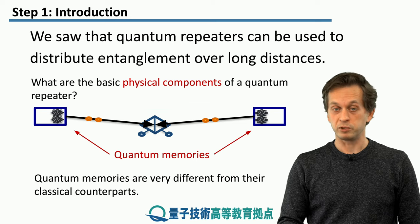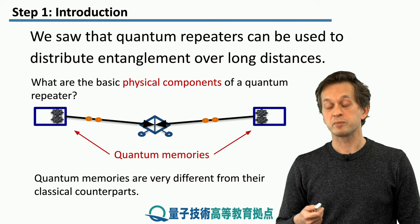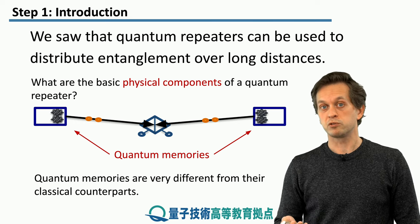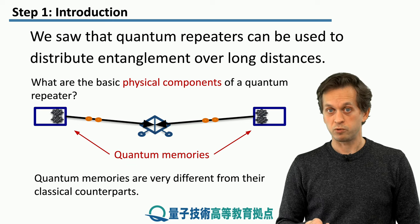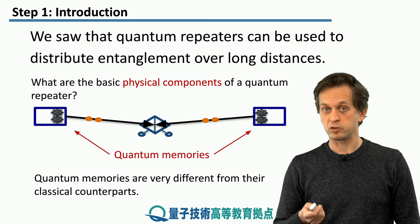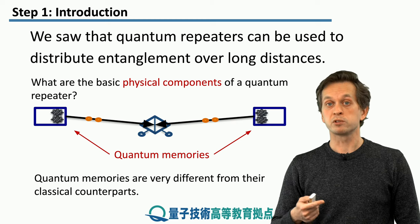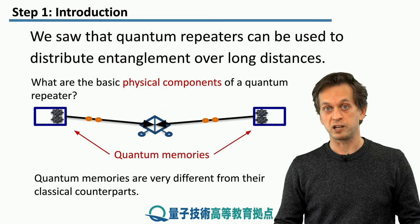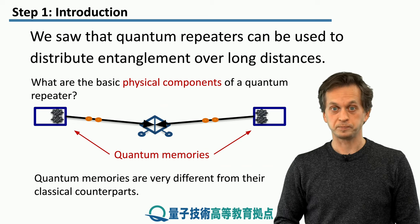The difference between classical memories and quantum memories is quite substantial. Classical memories usually store just zeros and ones — only classical bits. Whereas quantum memories have to be able to store one, zero, but also any superposition and in fact any entangled state. And that way they can share entanglement over the entire quantum network.